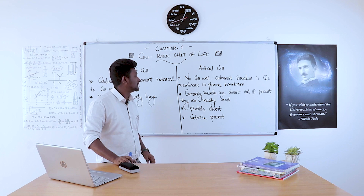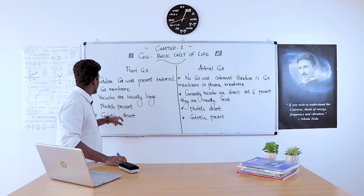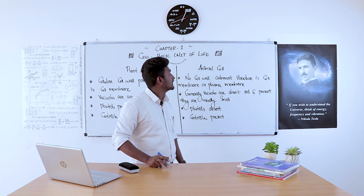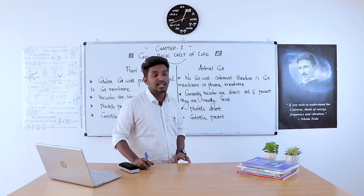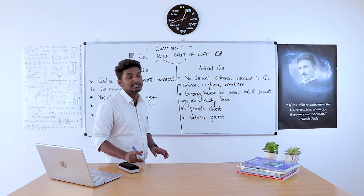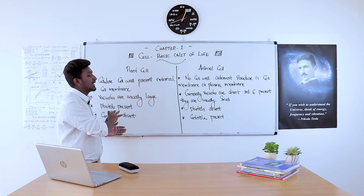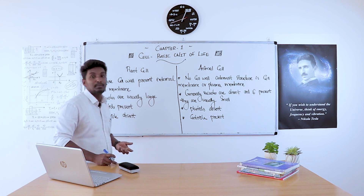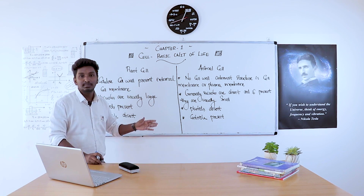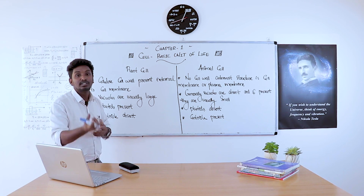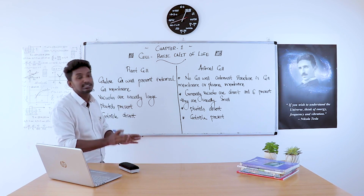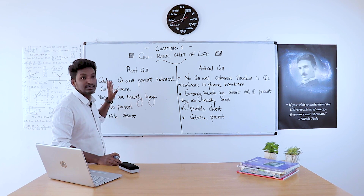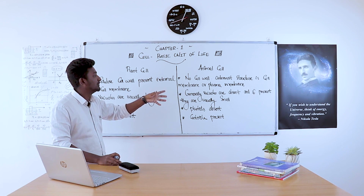For a plant cell, centrioles are absent, but for animal cells, centrioles are present. These are the differences between a plant cell and an animal cell. If you are asked to differentiate between them, you can draw a simple table and you will get full marks. For a plant cell, we have an additional external coating called the cell wall, but there is no cell wall in an animal cell — only plasma membrane.